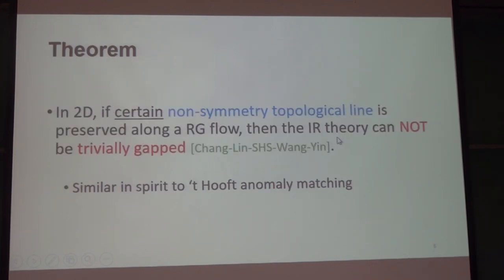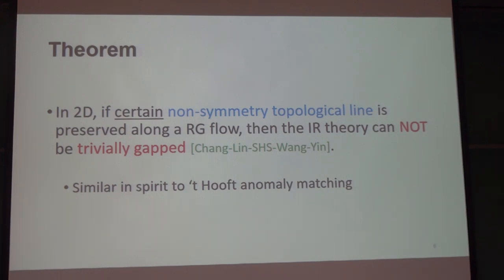Before I go into any details, let me announce the theorem. In 2D, if certain non-symmetry topological lines — and I will explain 'certain' in the rest of the talk — are preserved along the RG flow, then the IR theory cannot be trivially gapped. In other words, if this non-symmetry topological line is preserved, the vacuum in the IR cannot be a gapped phase with a single vacuum. It could be a gapped phase with degenerate vacua, or it could be a gapless CFT.